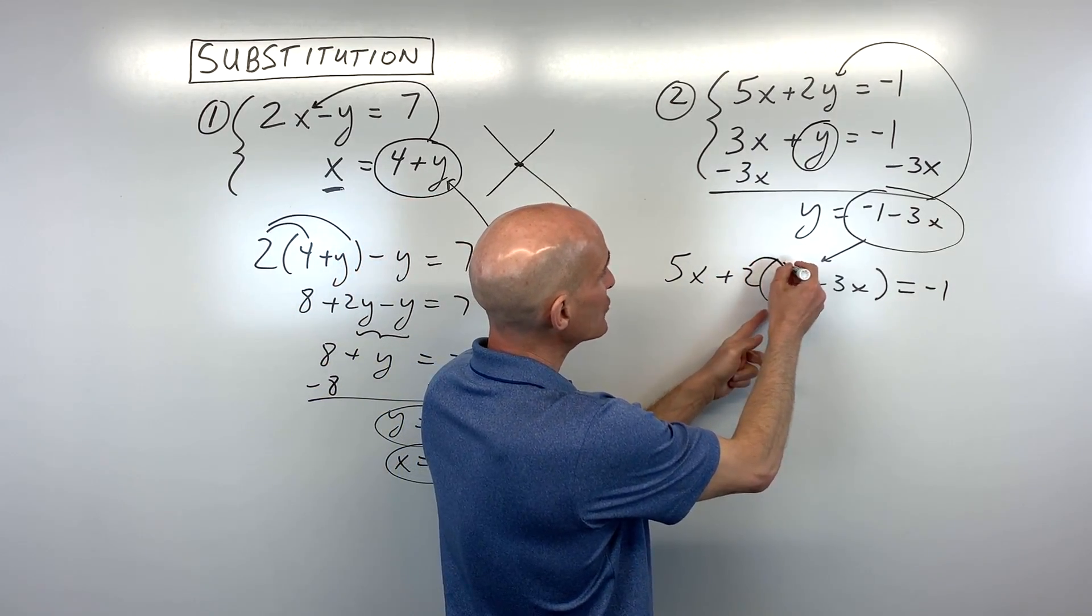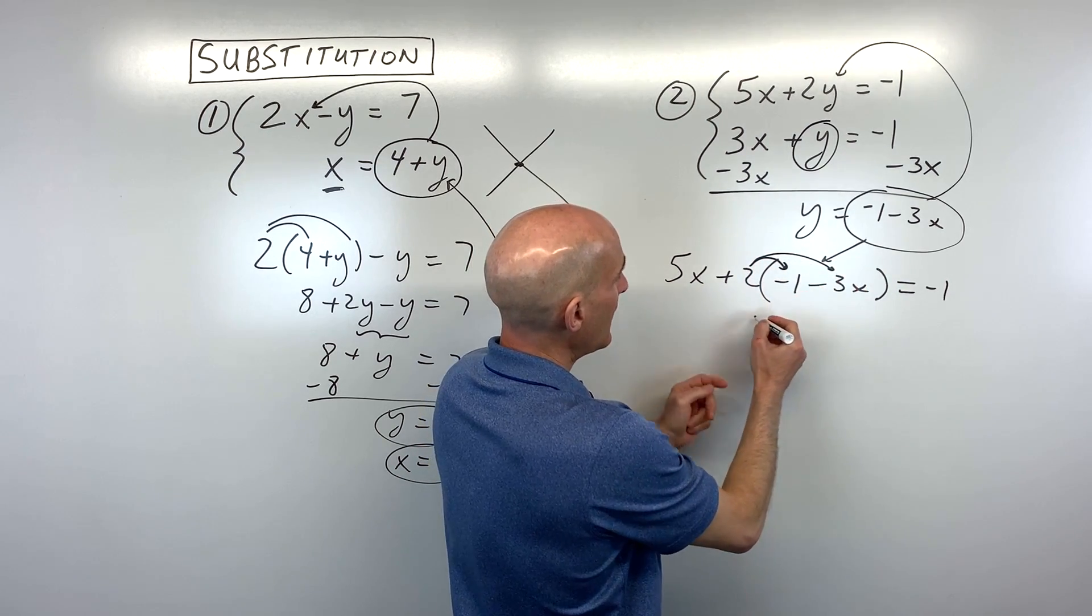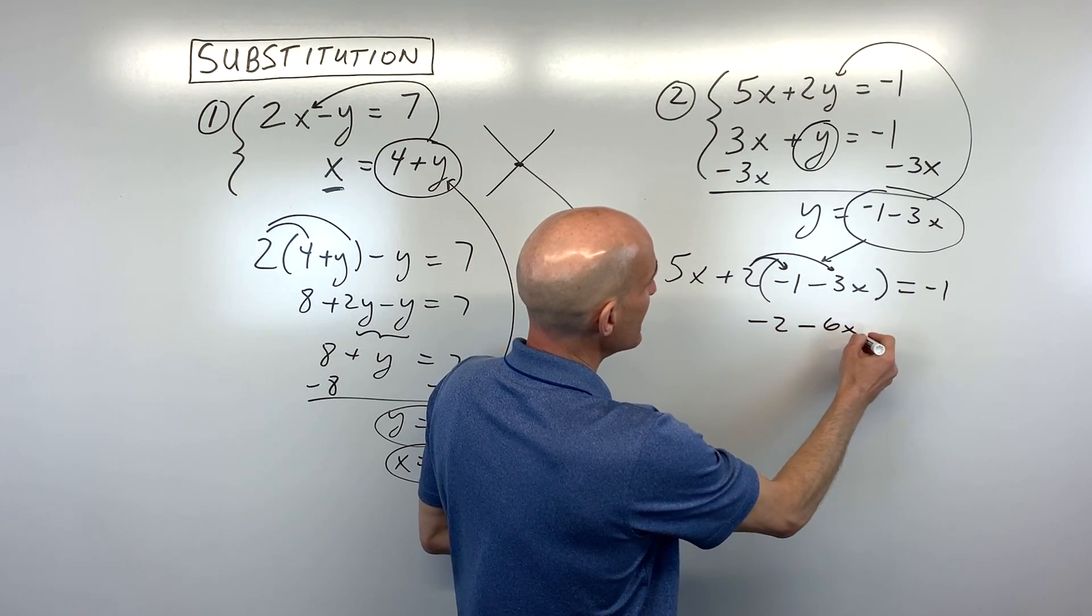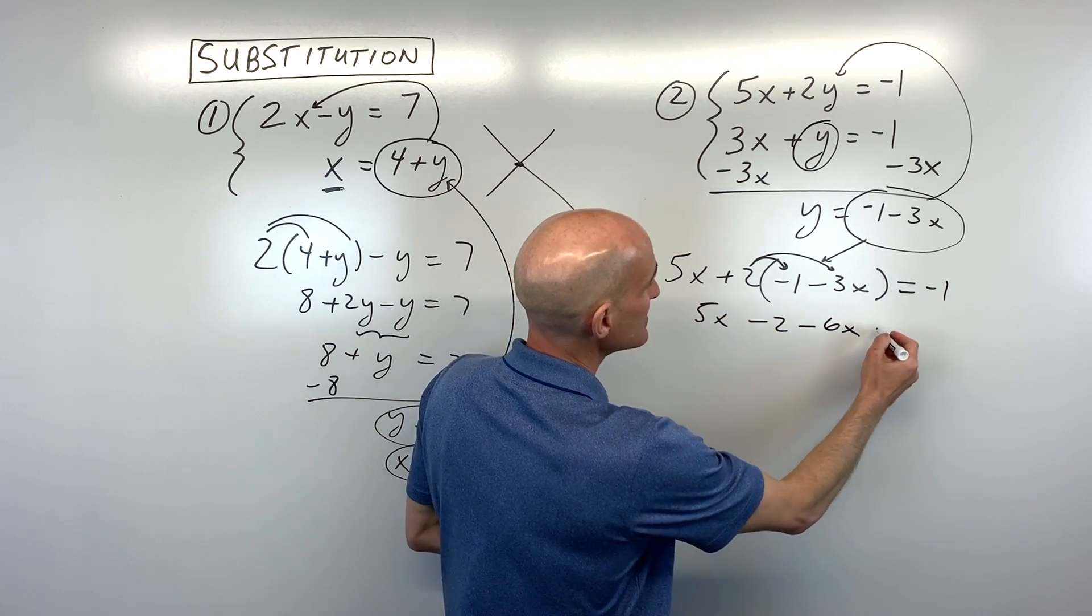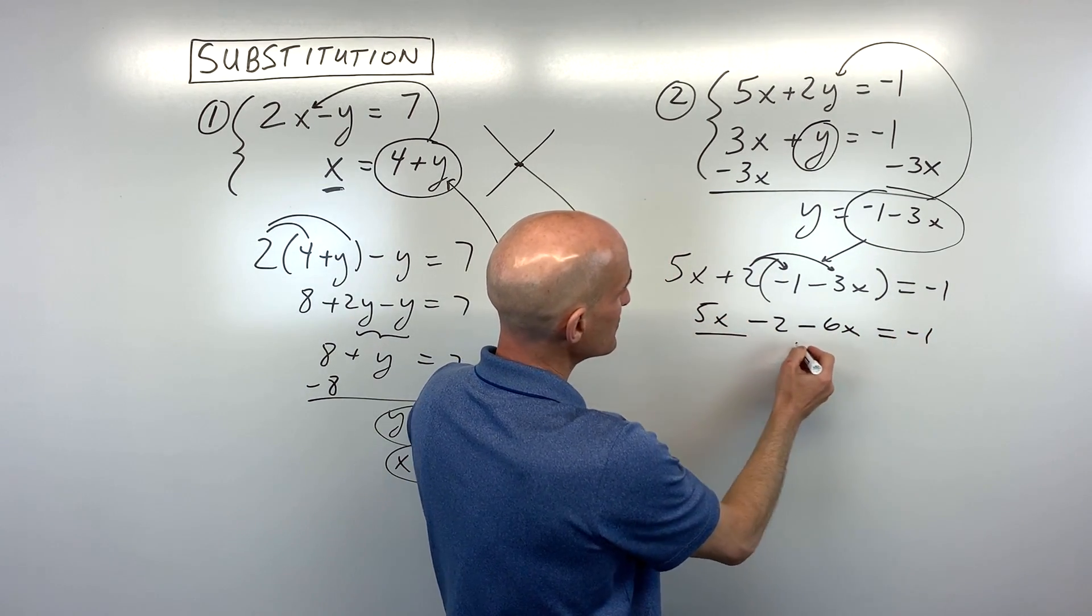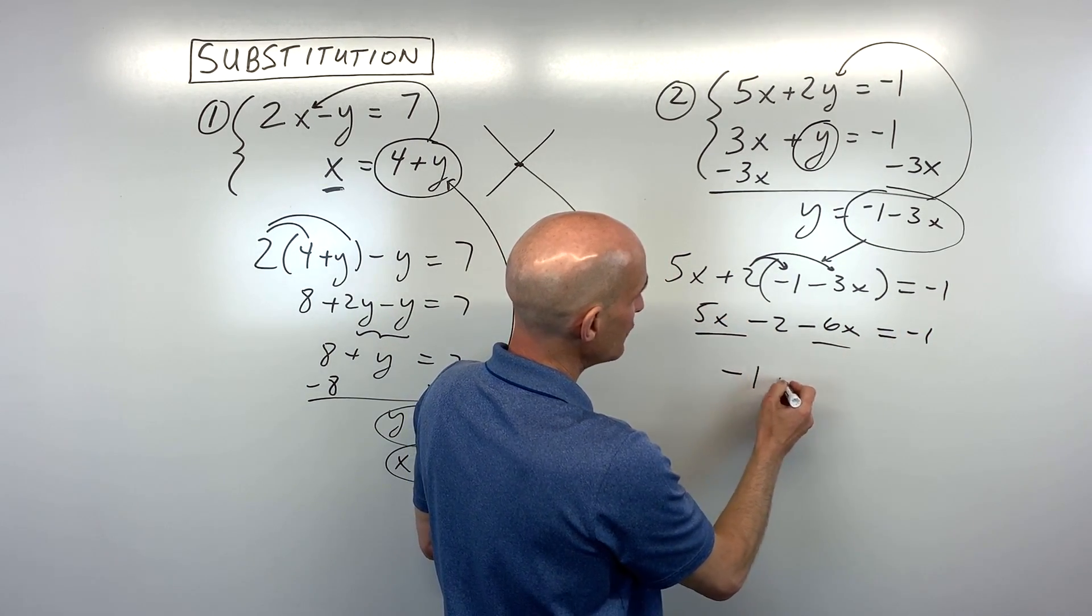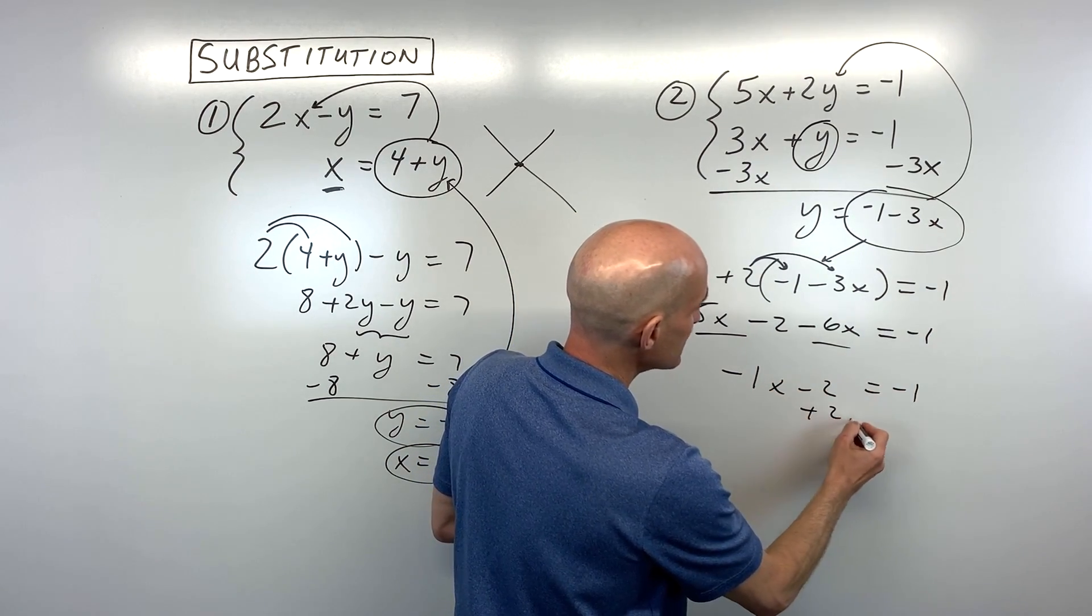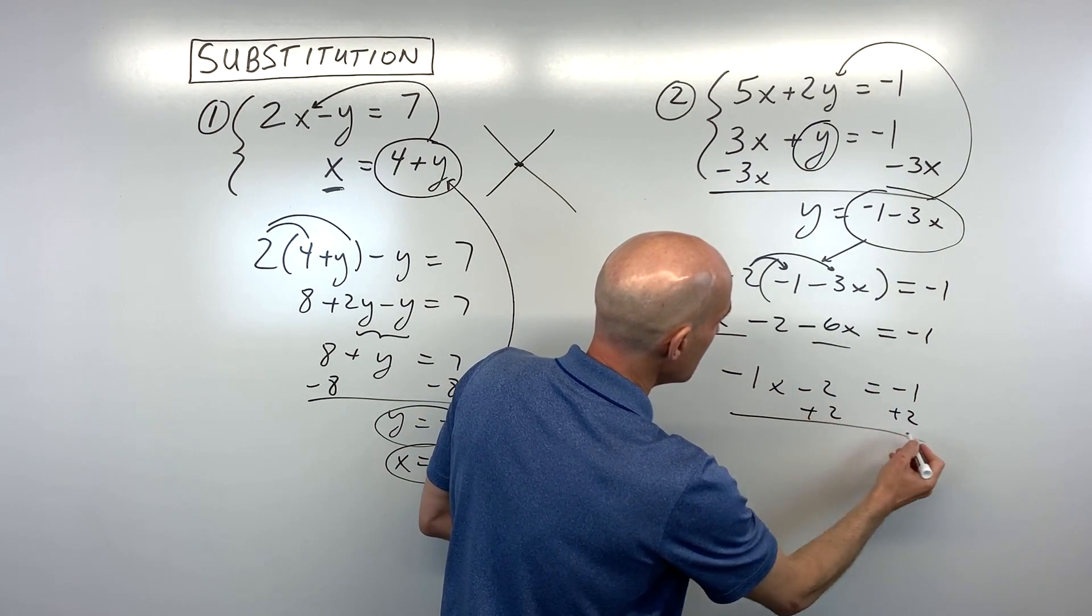Now we want to distribute the 2, which gives us negative 2 minus 6x. Bring down the 5x. Combine like terms: 5x and negative 6x is negative 1x.